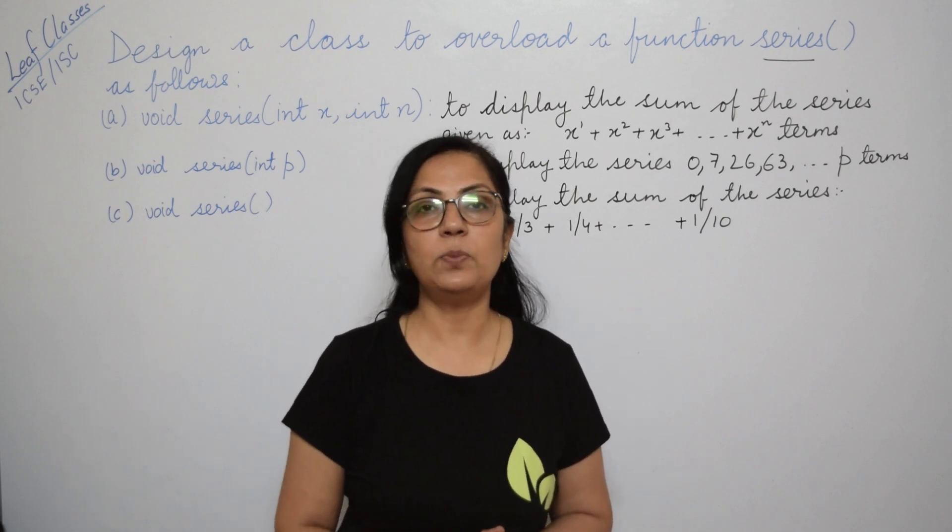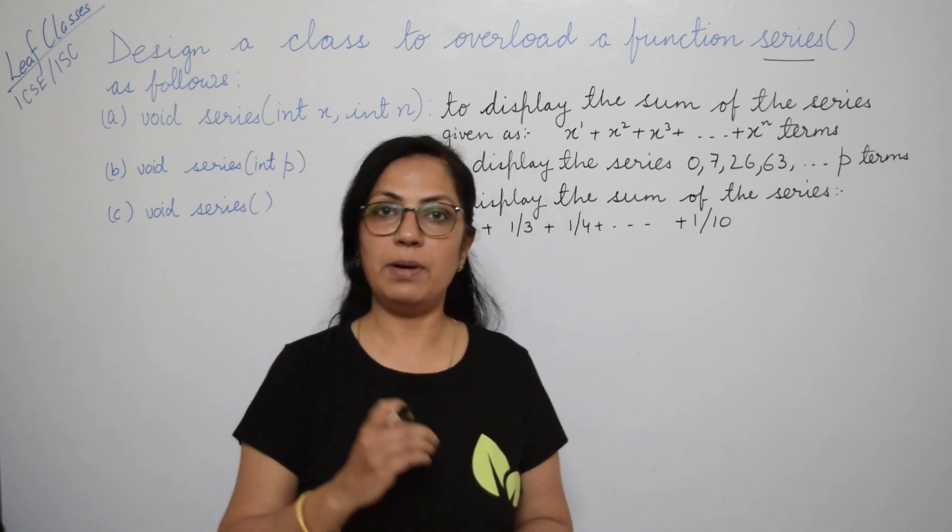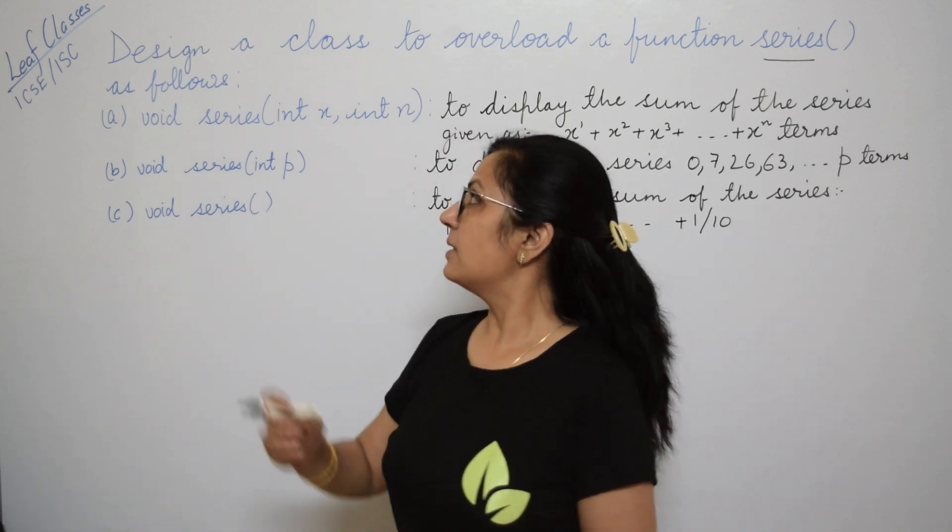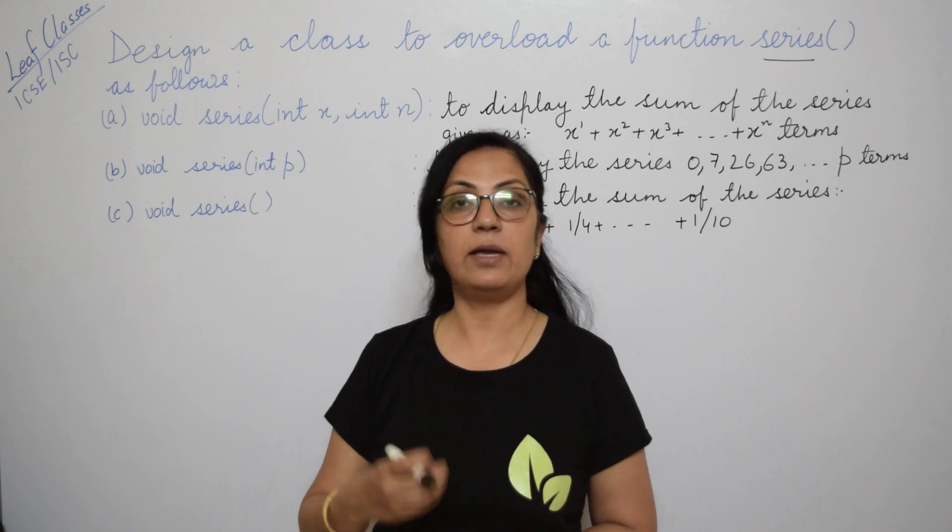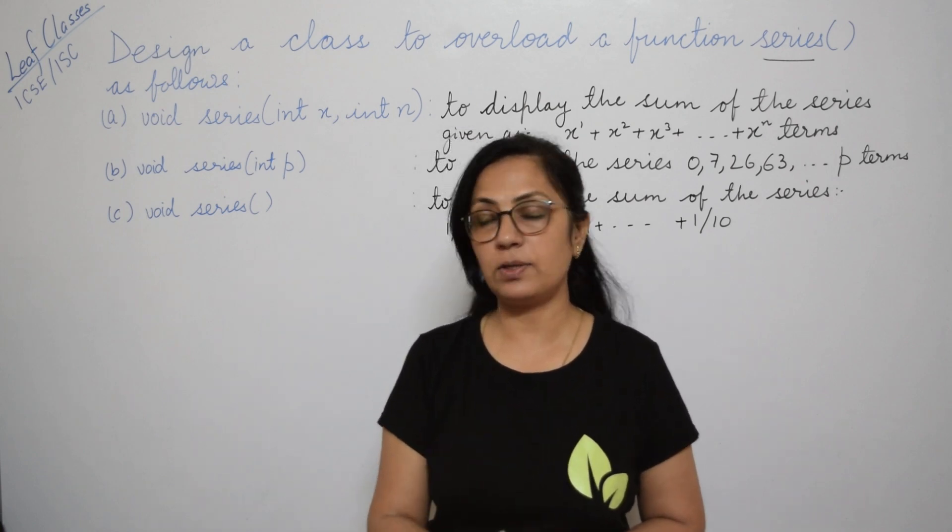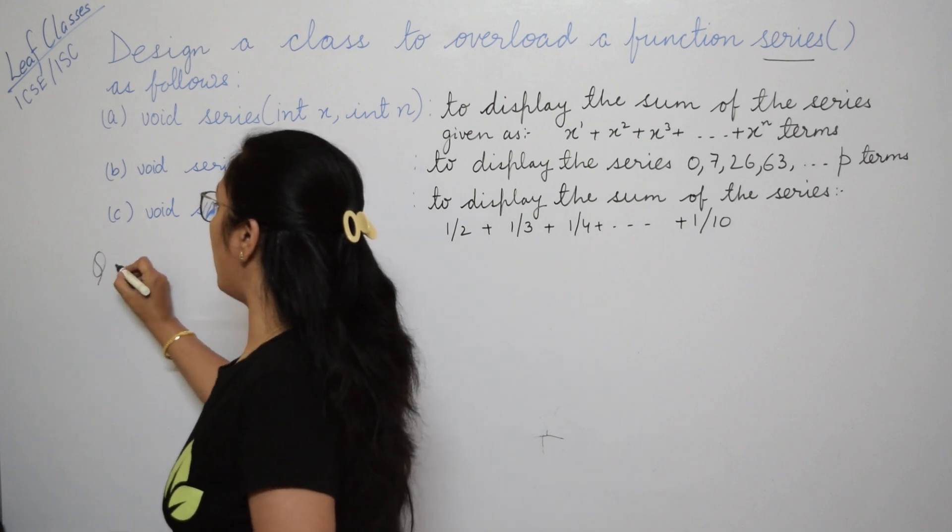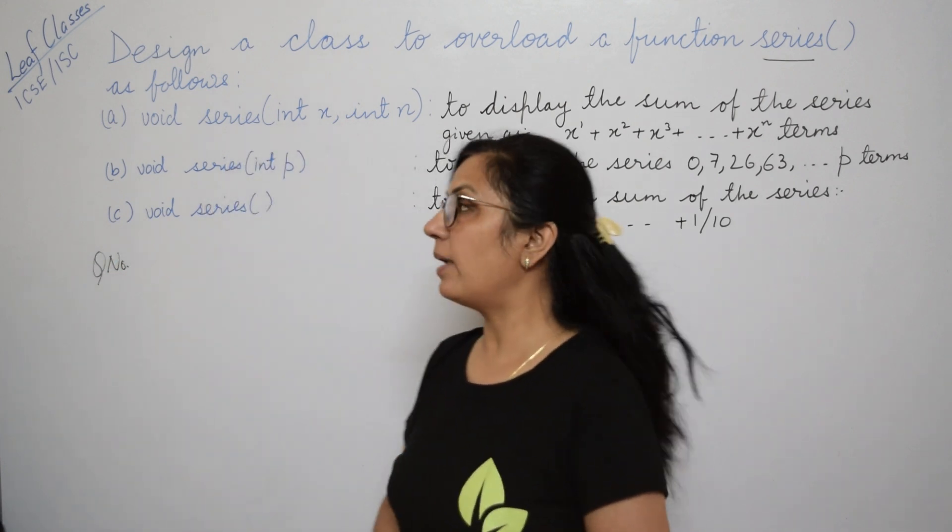One thing that you always miss: you don't put the correct question number. Please put the question number according to the question paper. Suppose this question is number five, then write 5, or 7, 8, or 3 - whatever it is, put the correct question number.